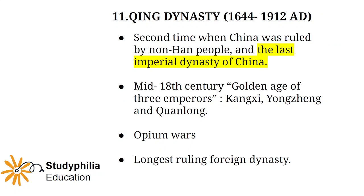The Qing dynasty was the second dynasty established by non-Han people — the Manchus — and it is also the last imperial dynasty of China. After the fall of the Qing dynasty, the rise of the Communist Party occurred in China. The Qing dynasty is also famous for the golden age of three emperors: Kangxi, Yongzheng, and Qianlong. Opium Wars took place during this period, and the Qing dynasty was the longest-ruling foreign dynasty.